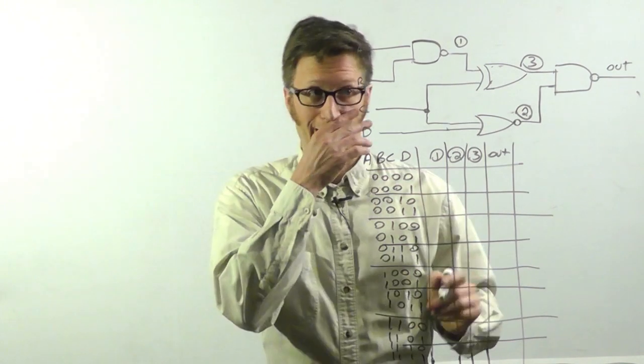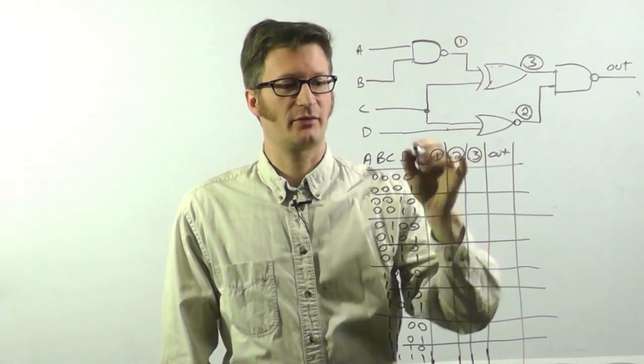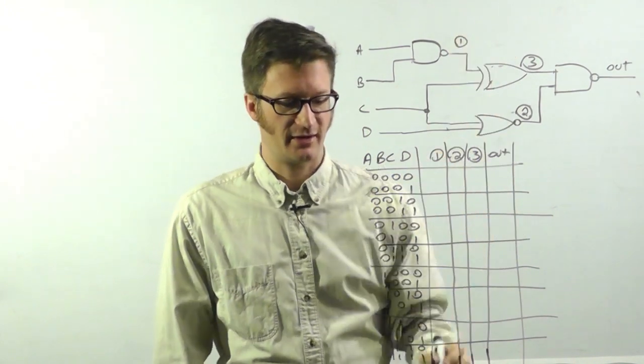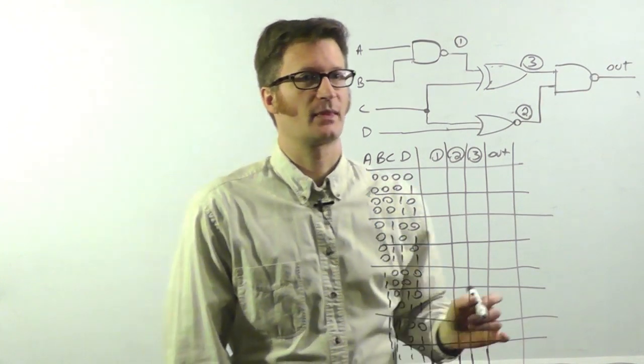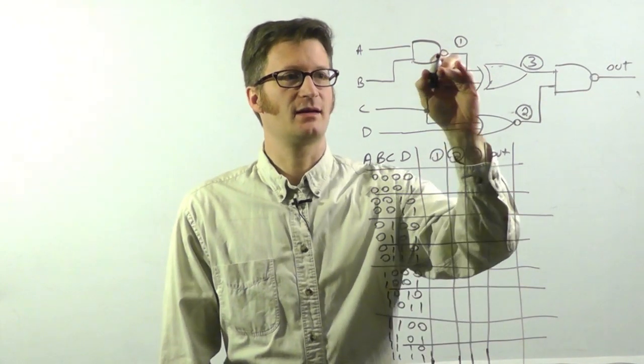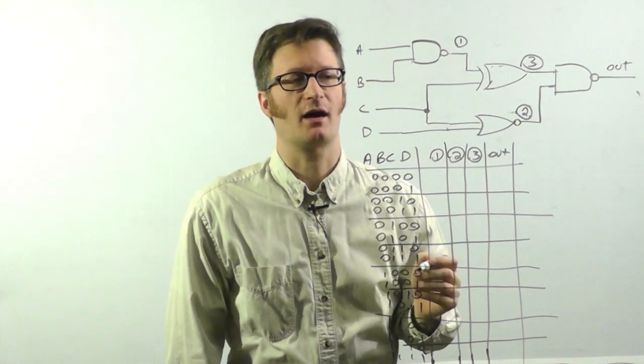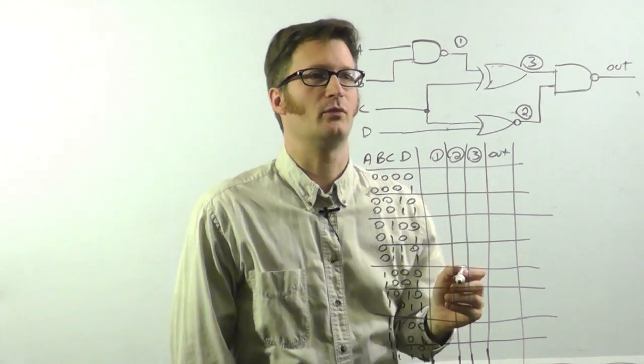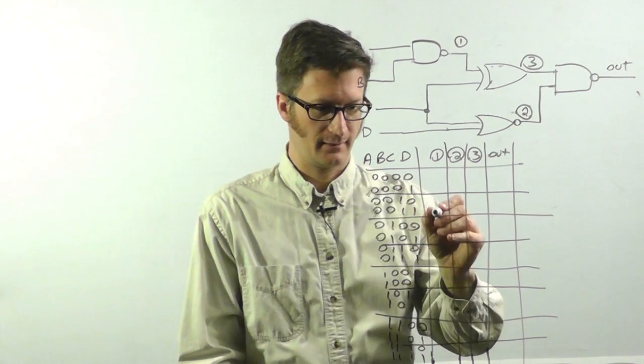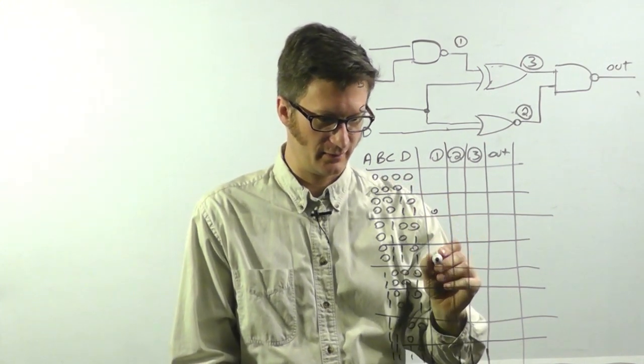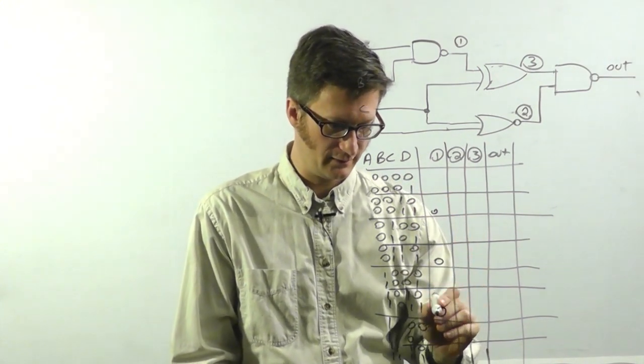So now for each point, I'm going to go through and I'm going to just create a truth table for it. So this is A NAND B. So if A and B are high, then the output will be low. So that'll be a zero, zero, zero.